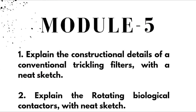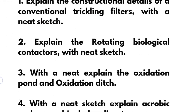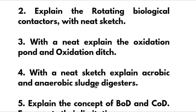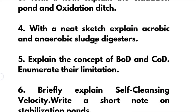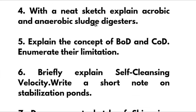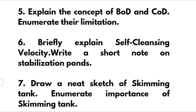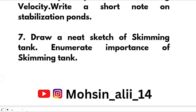Coming to Module 5, we have five to six questions: explain the constructional details of a conventional trickling filter with neat sketch, and the rotating biological contactor with neat sketch — most important. With a neat sketch, explain the oxidation pond and oxidation ditch. With a neat sketch, explain aerobic and anaerobic sludge digesters. Explain the concept of BOD and COD and enumerate their limitations. Briefly explain self-cleansing velocity. Write a short note on stabilization ponds. Draw neat sketch of skimming tank and enumerate importance of skimming tank.